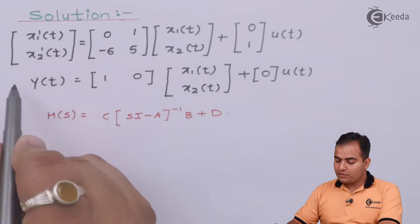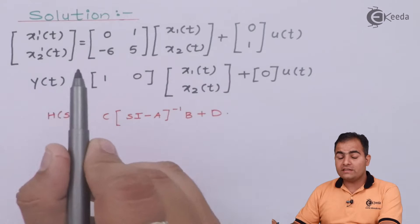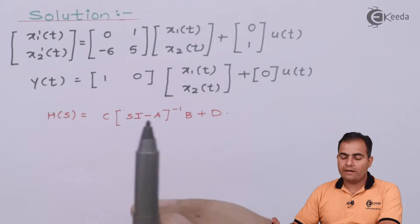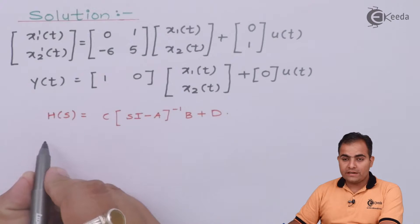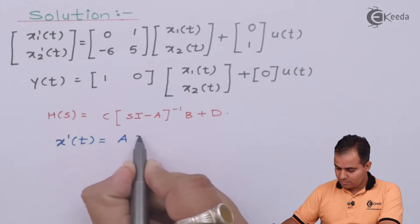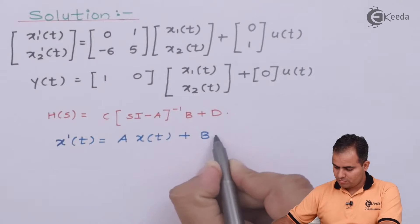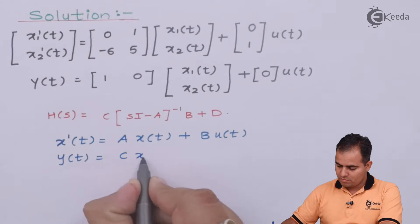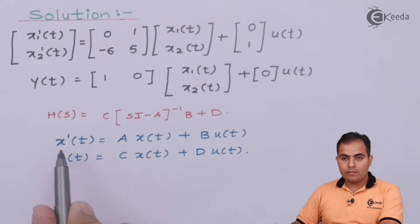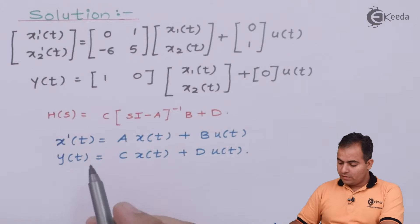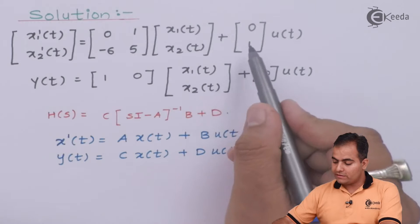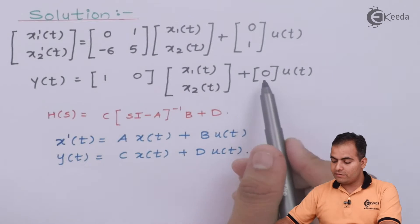If I compare this state variable model with the standard state variable matrix equation, I can identify the values of A, B, C, and D matrices. So after comparing both equations with the given question, my A matrix is this, my B matrix is this, my C matrix is this, and my D matrix value is 0.